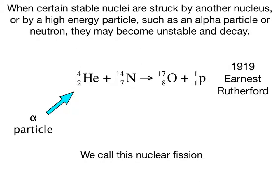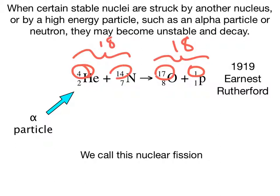We can check that this equation is balanced. Let's first look at the mass numbers. The alpha particle has a mass of 4, and the nitrogen-14 has a mass of 14, so on this side, the mass is 18. On the right-hand side, we end up with oxygen-17 and a proton, which has a mass of 1, so of course, you can see that the mass on the right side is also 18.